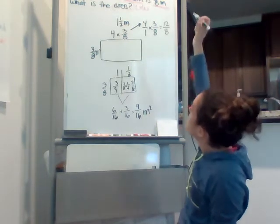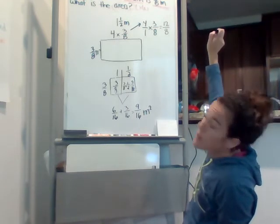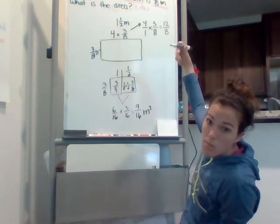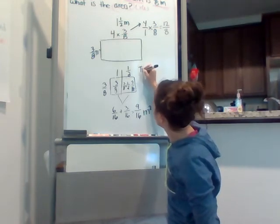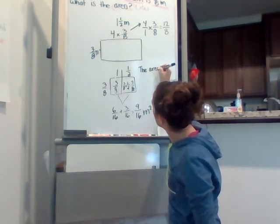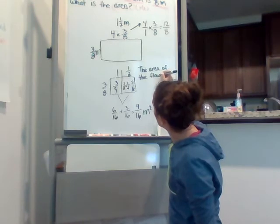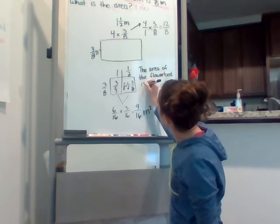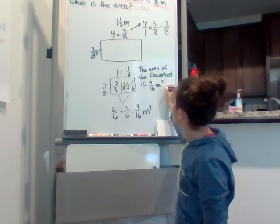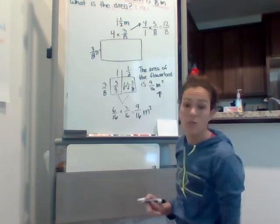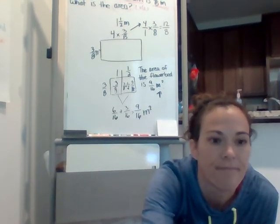All right, so the length of the flowerbed is 4 times as long as its width. If the width is 3 eighths meter, what is the area? So my sentence starter would just say the area of the flowerbed. The area of the flowerbed is 9 sixteenths meters squared. Please, please, please don't forget your units.